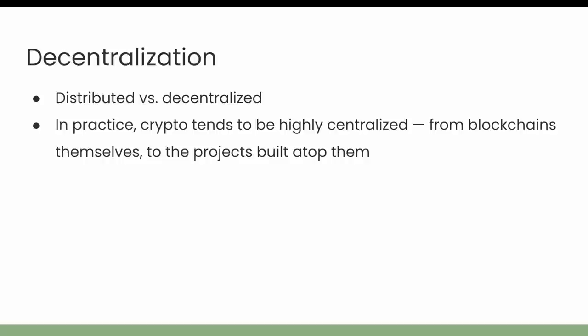It's important to realize that a distributed network could still be centralized — Amazon Web Services is a distributed network, for example, because they maintain data centers geographically distributed throughout the world. But no one refers to that as a decentralized system because Amazon maintains the power there. With blockchains, people will often confuse distribution for decentralization even when the actual power is very centralized. The decentralization of power is typically what people are thinking of when they hear about decentralization, but it is not inherent to a blockchain.